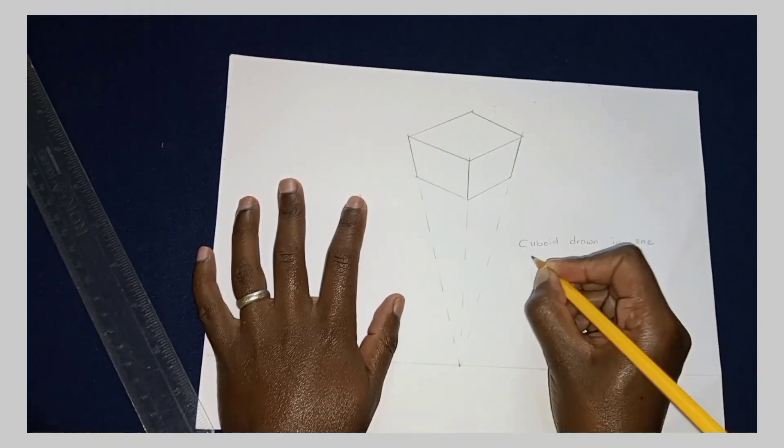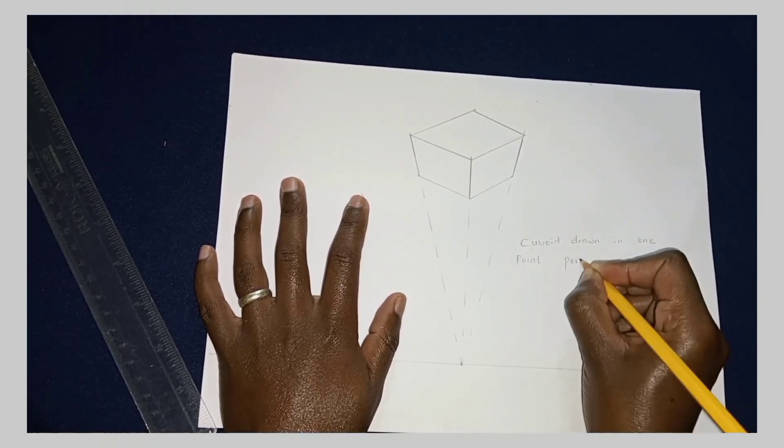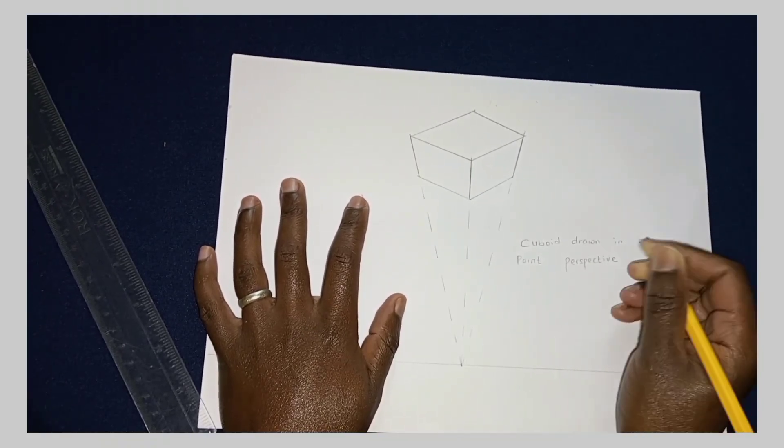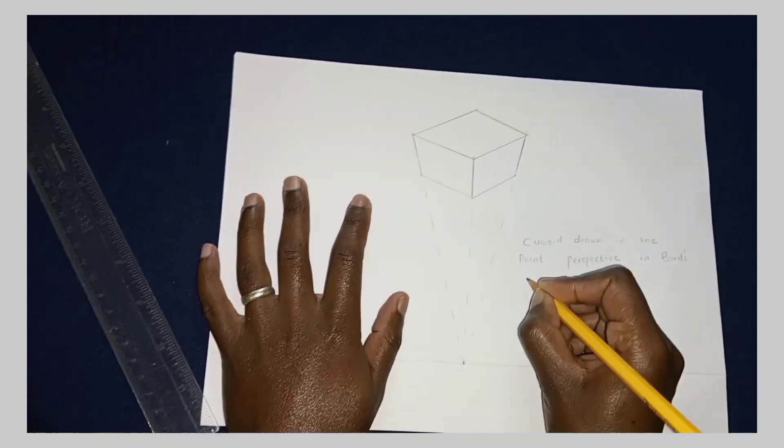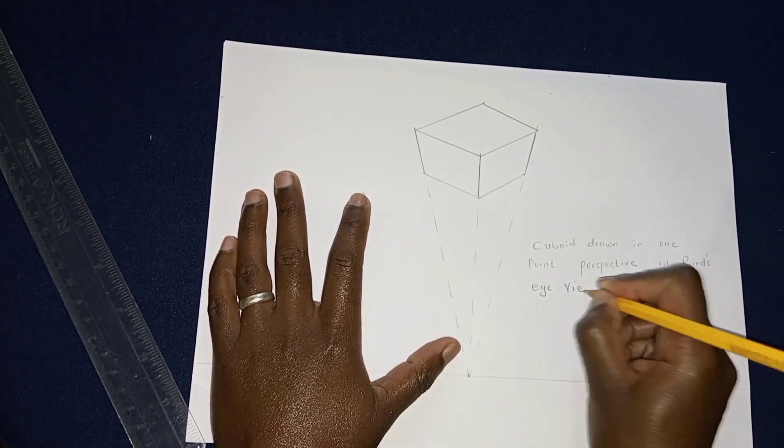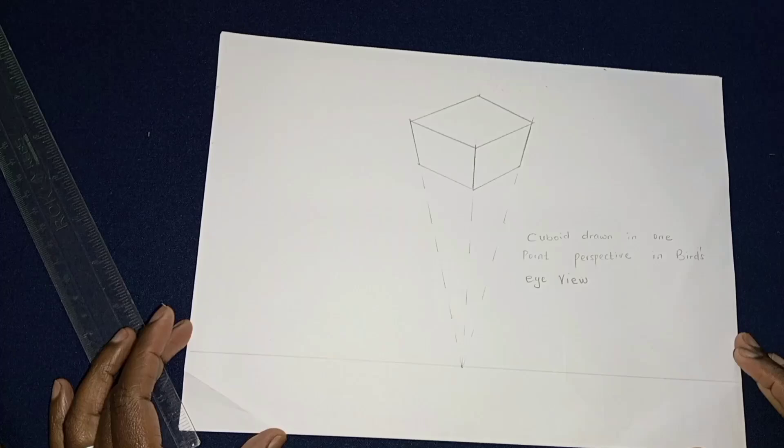So basically those are the two methods of drawing the cuboid into one point perspective through the bird's eye view. Thank you very much for watching this video. Kindly subscribe to my channel for more.